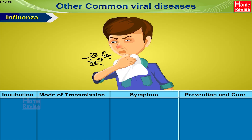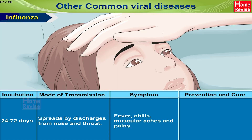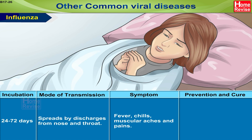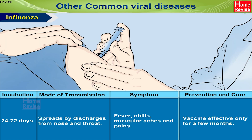Influenza: incubation period is 24 to 72 hours. Mode of transmission is through discharges from the nose and throat. Symptoms include fever, chills, and muscular aches and pains. Prevention and cure: vaccine available, but effective only for a few months.